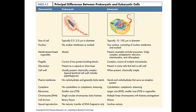Some other differences to draw your attention to: membrane-bound organelles are absent in prokaryotes. A membrane-bound organelle is simply an organelle with a membrane around it. These would include lysosomes, Golgi complex (sometimes called Golgi apparatus), the ER, the mitochondria, and chloroplasts. They all have membranes around them, and therefore they're only found in eukaryotes.